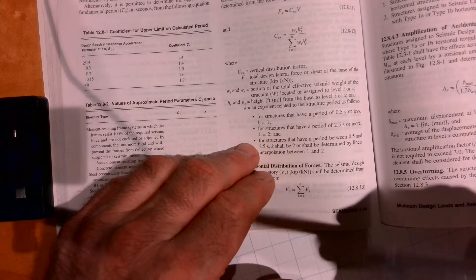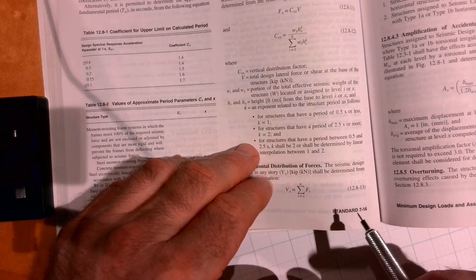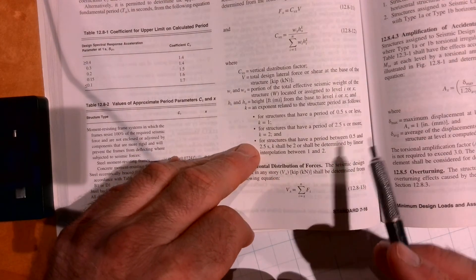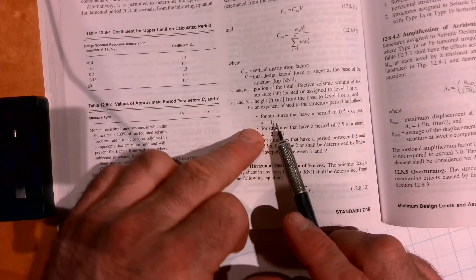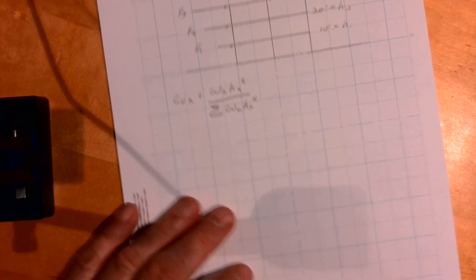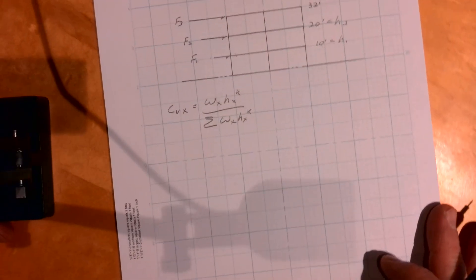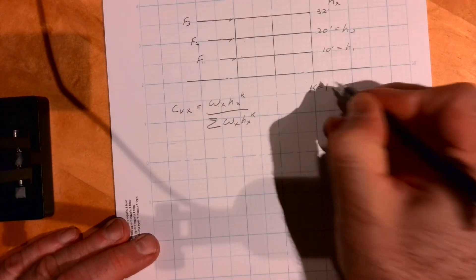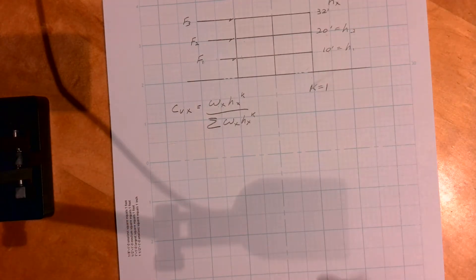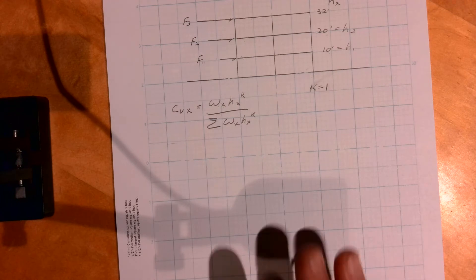Up to two and a half seconds it's two, and then you interpolate between them. Generally you can say for each story you gain a tenth of a second in period, so for three stories we're probably around 0.3 seconds, so we're gonna use a k of one.